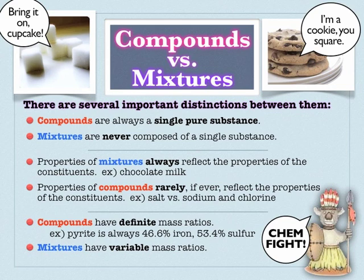Mixtures, due to the fact that they're a combination of different things, can have different proportions and will have variable mass ratios. My chocolate milk is certainly going to have a different ratio of chocolate to milk than yours — and even the chocolate and milk themselves are going to be in different ratios, which is why we have different types of milk. Those are three big ideas that students mess up a lot with mixtures and compounds, even on examinations and all the way to the final.